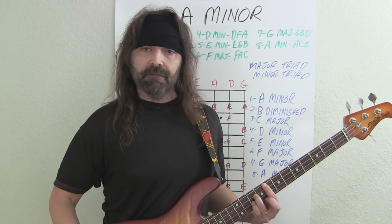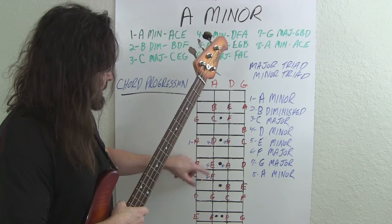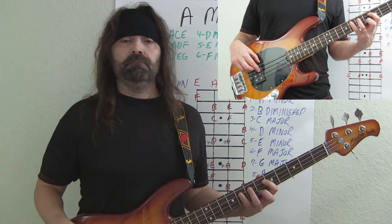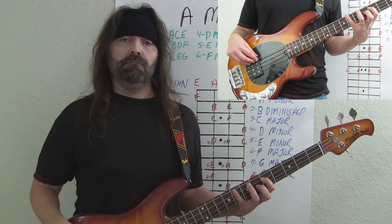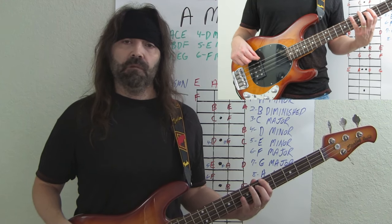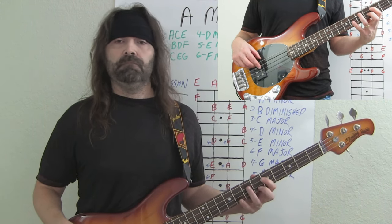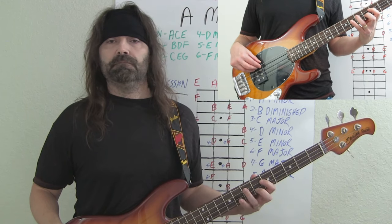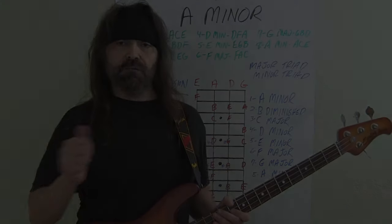Now let's get on to playing the minor scale. The A minor scale is A, B, C, D, E, F, G, A. Play it along with me — we'll go up, then backwards. Go up the scale one more time, then we go backwards.